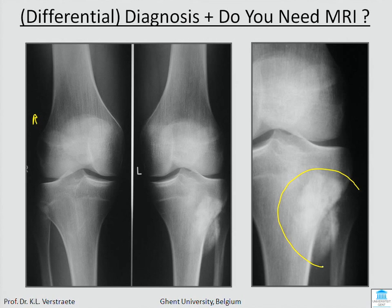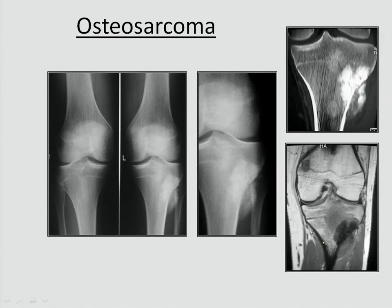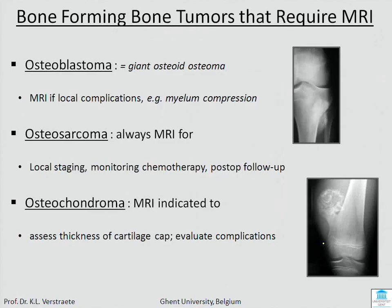The lesion is white on X-ray, and it leaves the bone — it goes outside the bone. It's an osteosarcoma, and in osteosarcoma you don't do a CT scan; you should do MRI in every malignant bone tumor. The bone forming tumors which need MRI are osteoblastoma, which is a giant osteoma, osteosarcoma — you always need MRI — and osteochondroma, where you need MRI to see the cartilaginous cap.